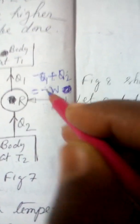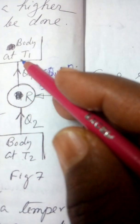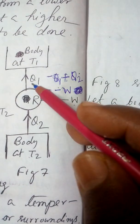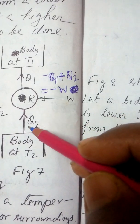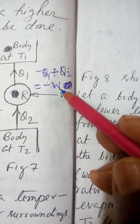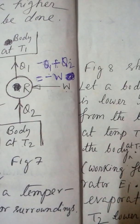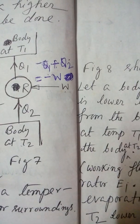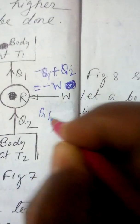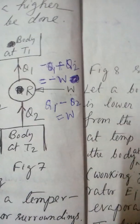So minus Q1 is taken out from the system and plus Q2 is added. The summation of Q, and the summation of W, gives us W equals Q1 minus Q2. So Q1 minus Q2 is equal to W.